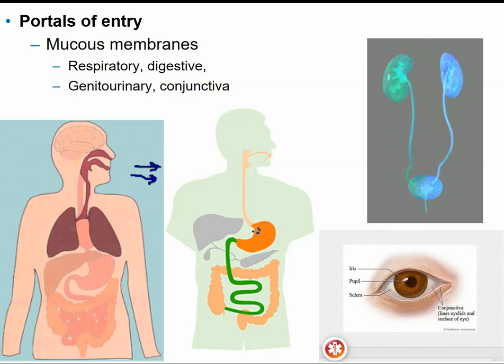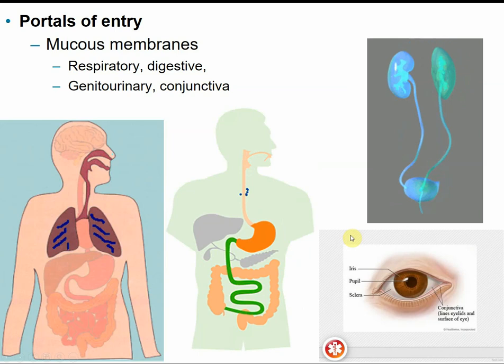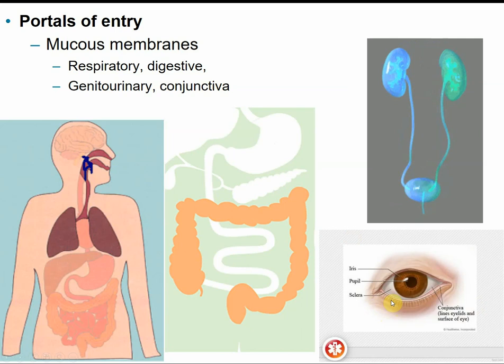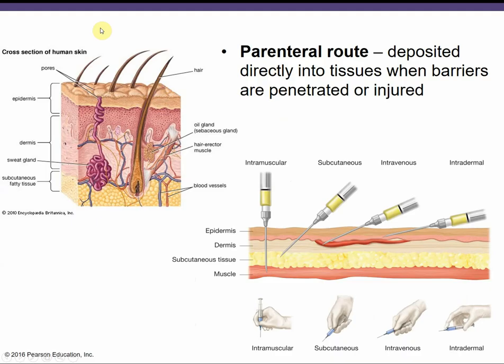The digestive system is another portal of entry, although most microbes will be killed by the hydrochloric acid in the stomach. Some can make it through and cause infection. The genitourinary tract — for urinary tract infections or sexually transmitted infections — as well as the conjunctiva, the membrane of the eye, are also portals. The conjunctival membrane is connected to the respiratory system, since tear ducts drain into the nasal cavity, so something could land on your eye and enter the respiratory system.